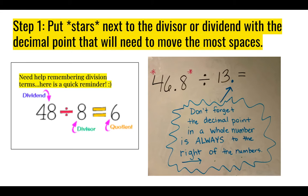In our problem, 46 and 8 tenths divided by 13, I starred my dividend because the decimal point was between the 6 and the 8, and I would have to move one whole space to make it a whole number. Whole numbers always have a decimal point to the right of all their digits. I also put a decimal point after the number 13 to remind myself that even though whole numbers don't always show it, there is always one there. Write down the stars and the decimal point for 13 and make sure it looks like my problem.